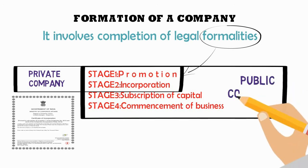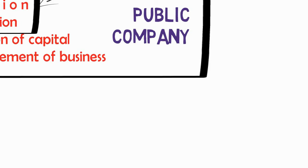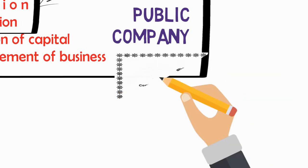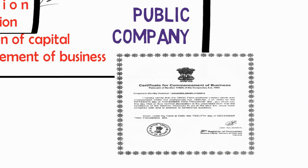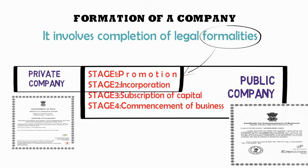But a public company has to complete all four stages. The public company has to get a certificate of commencement, and only after that can the public company start its business activities. So this is the key difference between a private company and a public company when it comes to starting business activities.